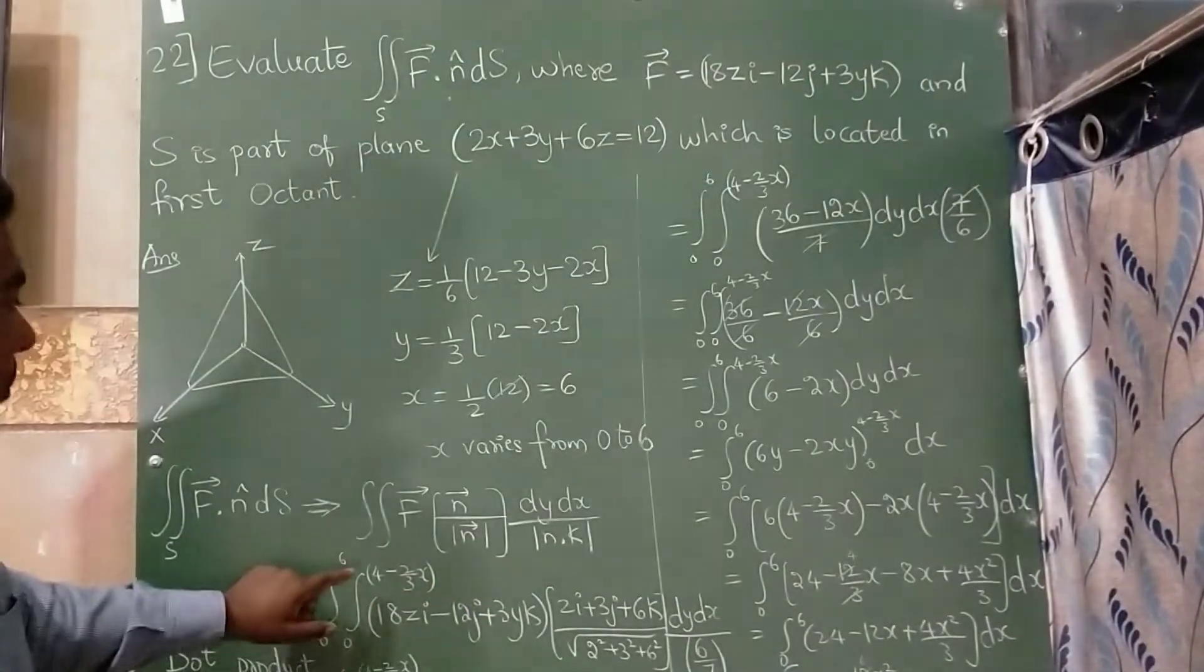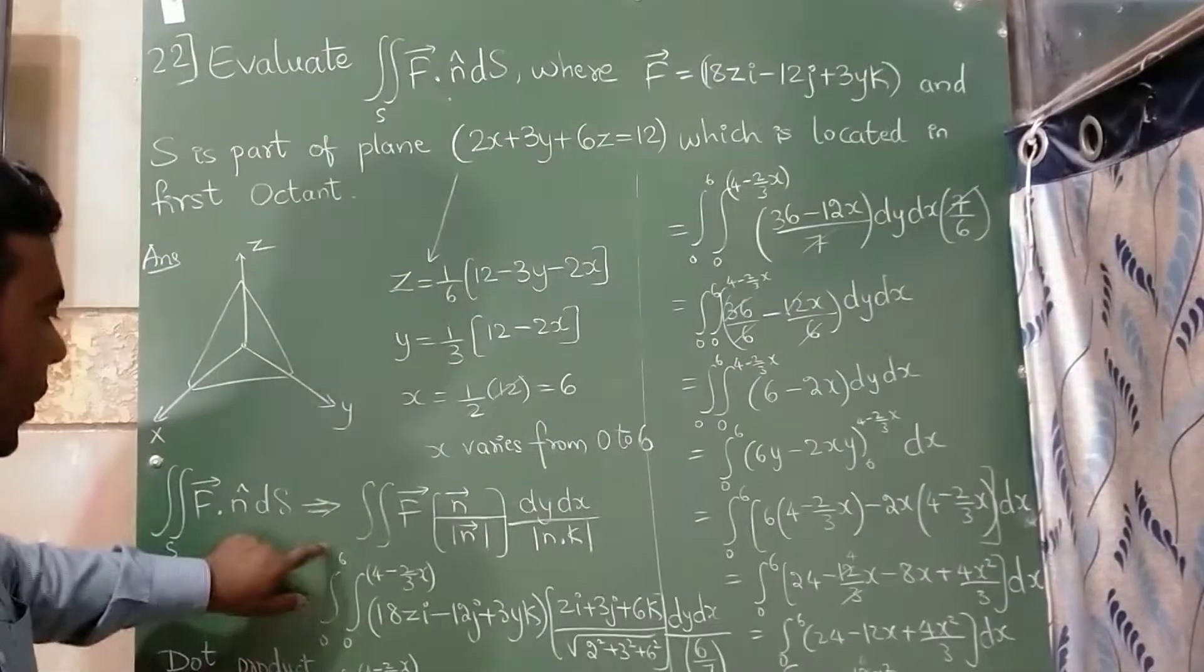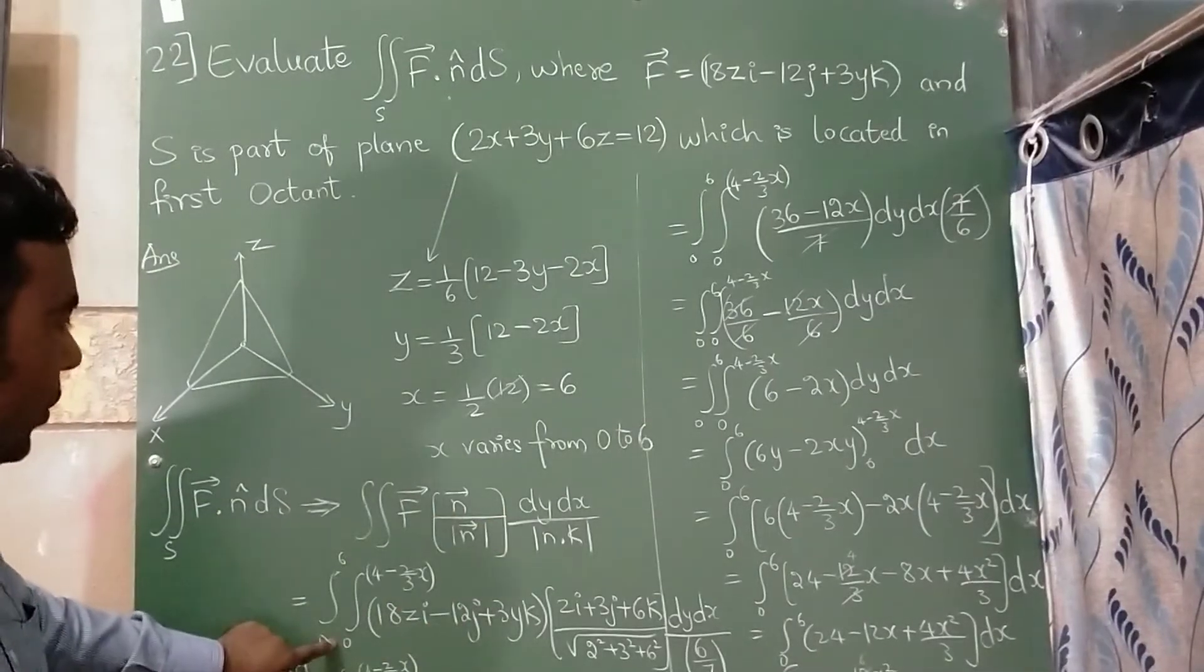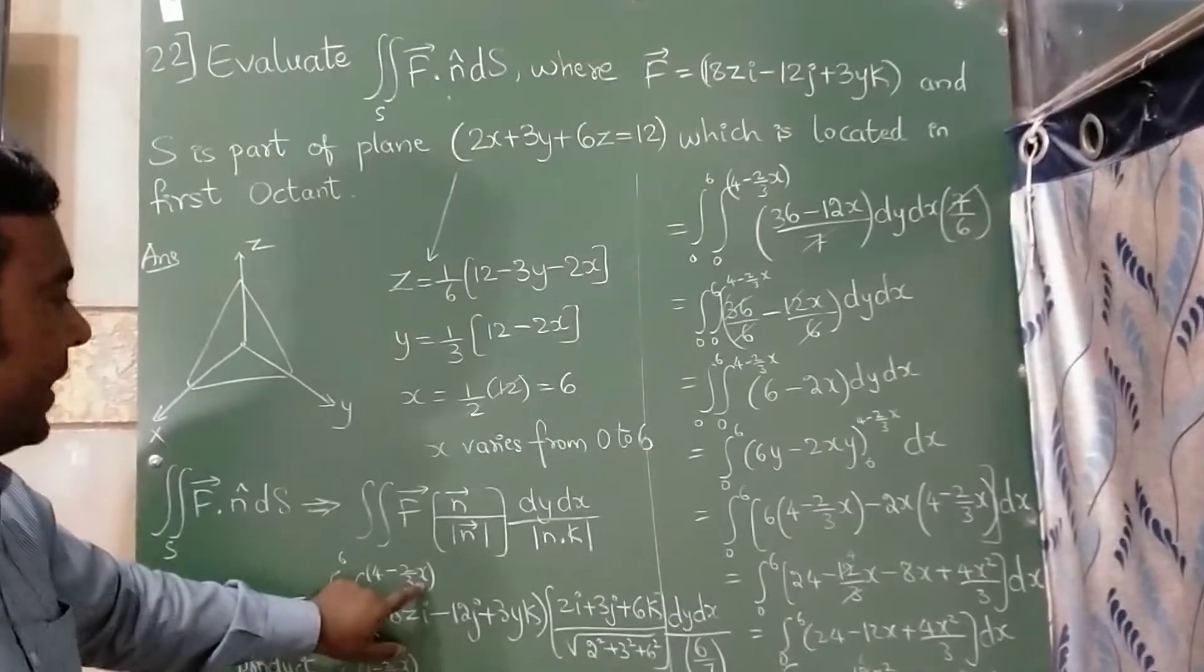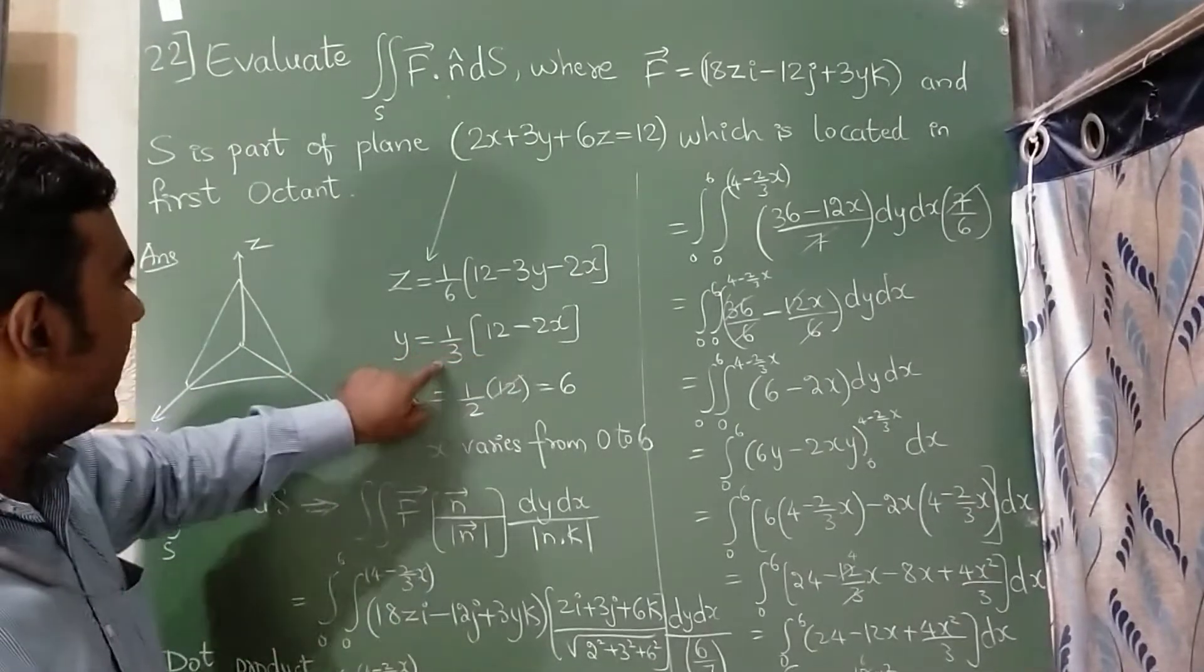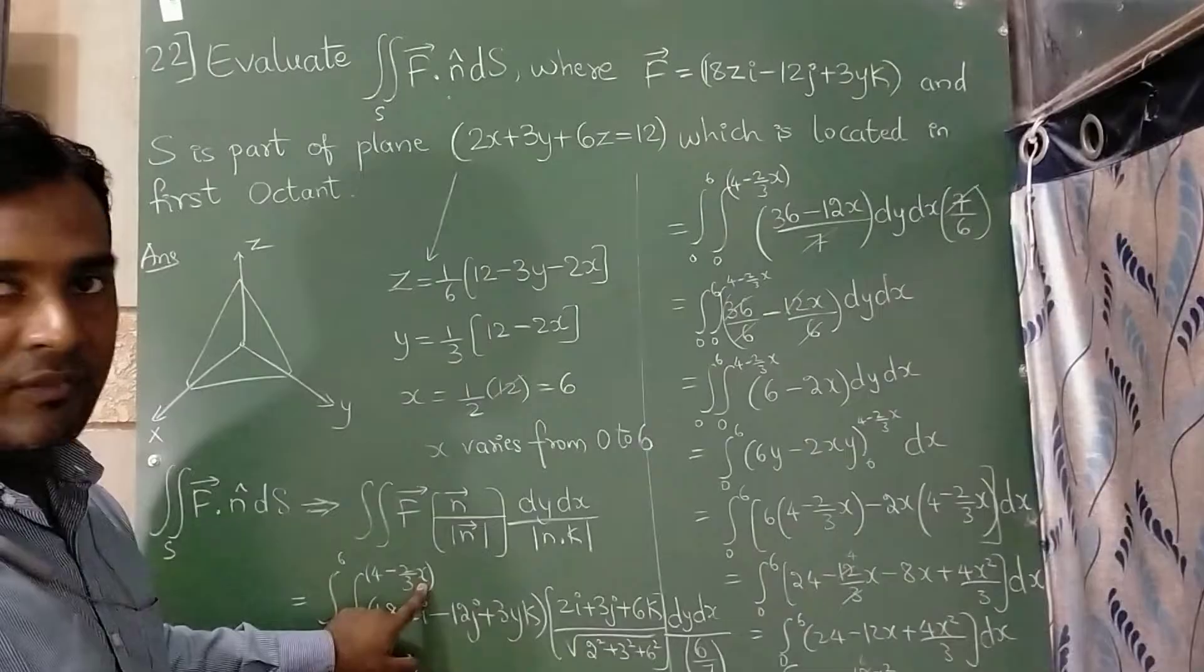Now dS can be written as dy dx divided by modulus of n into k. Now since there is a dx, so x varies from 0 to 6. dy means 0 to 4 minus 2 by 3 x. This has come from here y, so 12 divided by 3 is 4 minus 2 upon 3 x.